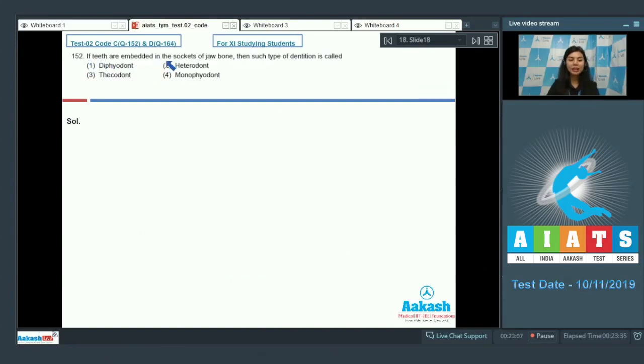Question 152: If teeth are embedded in the sockets of jawbone, then such type of dentition is called diphyodont, heterodont, thecodont, or monophyodont. Let's look over each of these terminologies. The first one, diphyodont, means two sets of teeth. Second, heterodont means different types of teeth. For example, humans have incisors, canines, premolars and molars. So, different types of teeth.